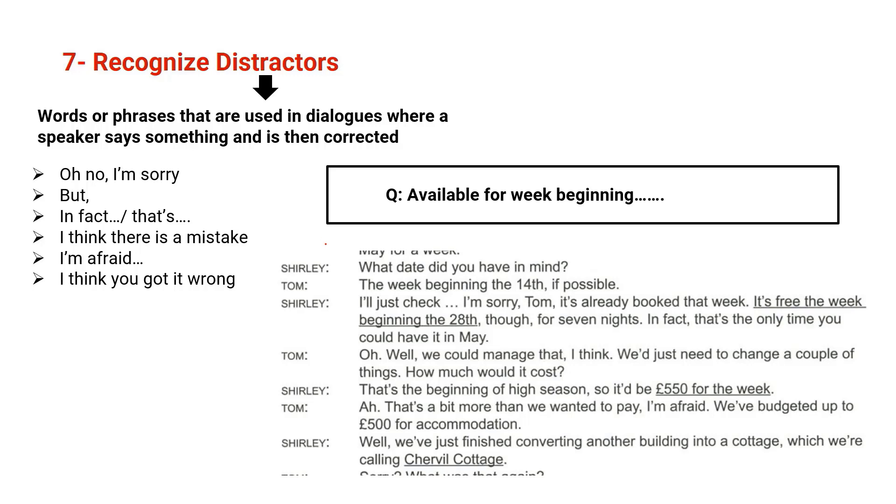This is the question and here is the script that you supposedly listen to. Available for week beginning, so you underline the keywords: available and week beginning. Now let's read the script. What date did you have in mind? The week beginning the 14th if possible. I'll just check it. I'm sorry Tom, it's already booked that week. It's free the week beginning the 20th though for seven nights. In fact, that's the only time you could have it in May. So when you listen, you hear the week beginning the 14th, so you simply spot this number and you think this is the correct number. But afterwards there is a distractor, which is I'm sorry.